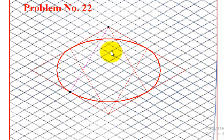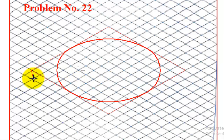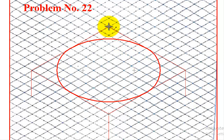Next, after finishing the top ellipse, we need to give the thickness. Before doing that, we need to delete the inside lines because too many lines will lead to confusion. The thickness of the cylindrical slab given is 30 mm. So we need to move 3 boxes down from all corners: 1, 2, 3 from here, 1, 2, 3 from here, 1, 2, 3 from here, and from the top corner 1, 2, 3. Then join the bottom corners of these lines.